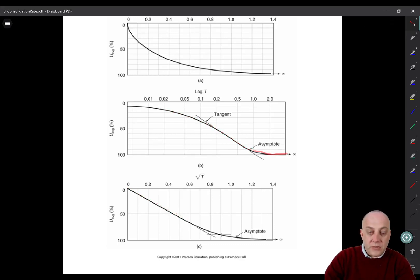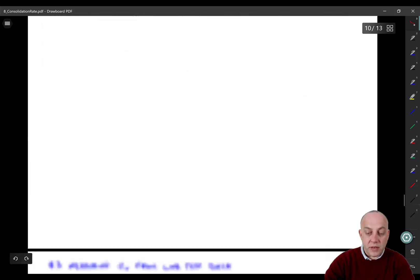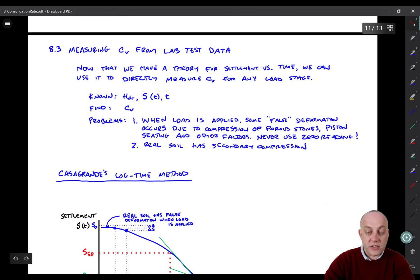You might be wondering why we have two different methods. If this is curve fitting, one method should work fine. Well, it turns out that real data has some issues. Real soil doesn't conform to Terzaghi's one-dimensional consolidation theory. So we have to do some adjustments. There are multiple theories. It's always good to use both of them to constrain the range of C sub V.